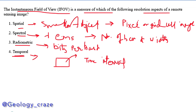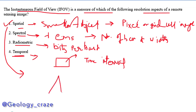The instantaneous field of view — it comes under spatial resolution. It means how much area is viewed by the sensor at a given instant.